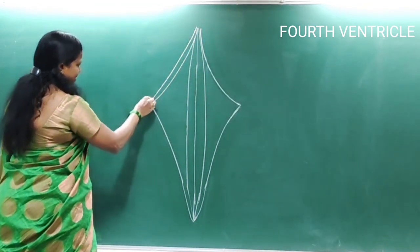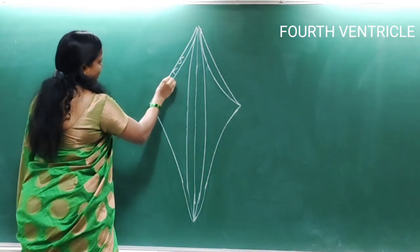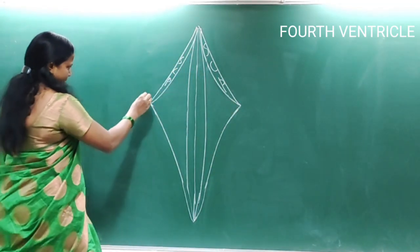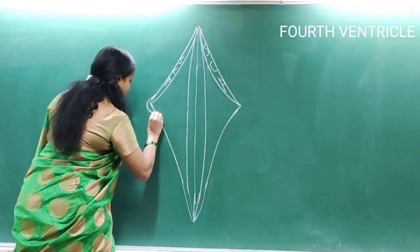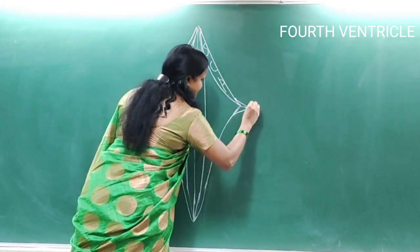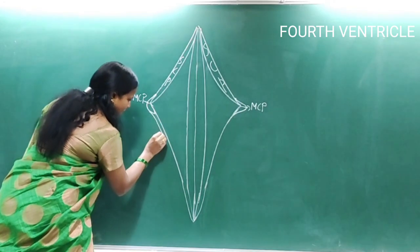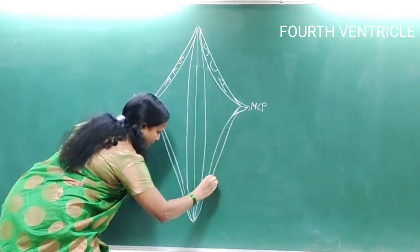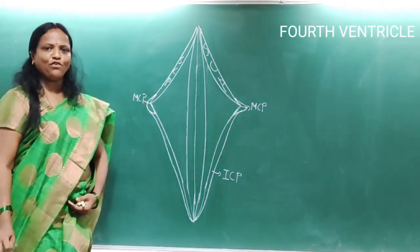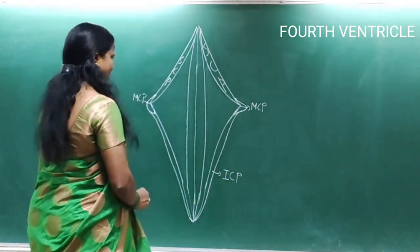The upper part shows the superior cerebellar peduncle, which connects the cerebellum with the midbrain. The middle part shows the middle cerebellar peduncle, which connects the cerebellum with the pons. The lower part is the inferior cerebellar peduncle, also called the restiform body, which connects the cerebellum with the medulla oblongata.